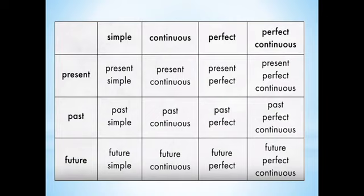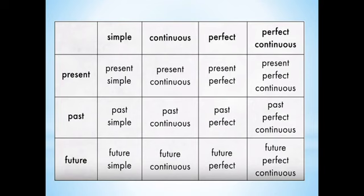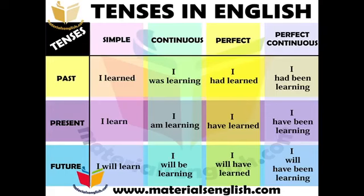Most people fear tenses, but I think it is the easiest form of grammar. Present tense has four parts: simple present, present continuous, present perfect, and present perfect continuous. Past tense also has four parts: past simple, past continuous, past perfect, and past perfect continuous. Future tense similarly has four parts: future simple, future continuous, future perfect, and future perfect continuous. These are the kinds of tenses that we have.